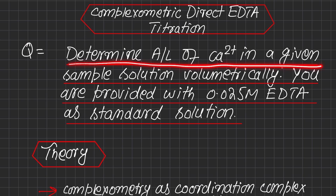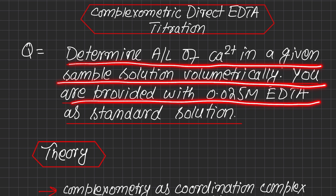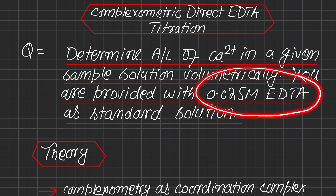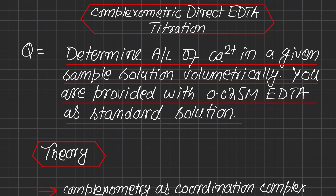The question statement of this titration is to determine the amount per liter of calcium ions in a given sample solution volumetrically. You are provided with 0.025 molar EDTA as the standard solution. In this direct complexometric EDTA titration, calcium ions will be our analyte, whereas 0.025 molar EDTA solution will be our standard solution acting as the titrant.